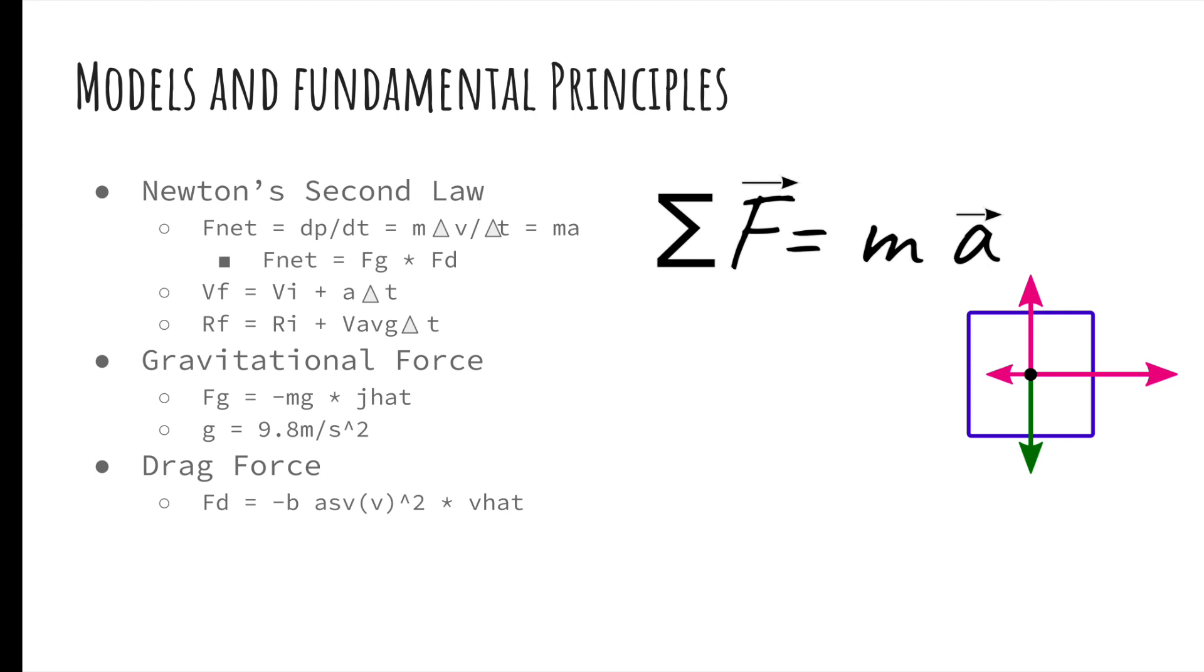Another principle we use is the formula for gravitational force. Since our object is falling towards the ground, we know it's affected by gravity. Finally, we also use the formula for drag force, which is an opposing force to gravity that results when a solid object interacts with fluid air. The greater the surface area of the object, the greater the drag force.